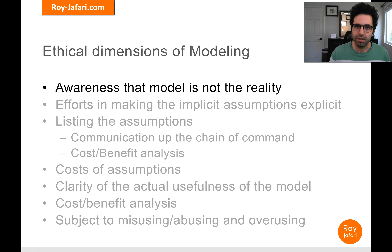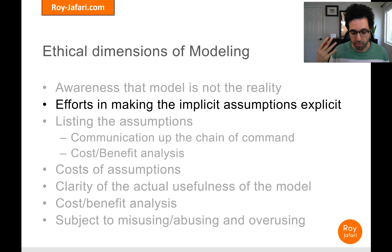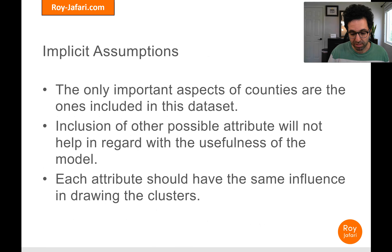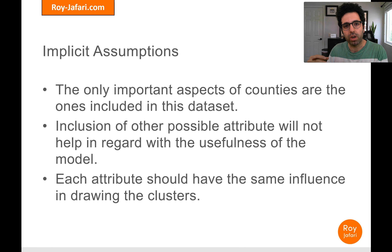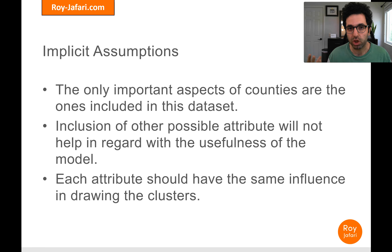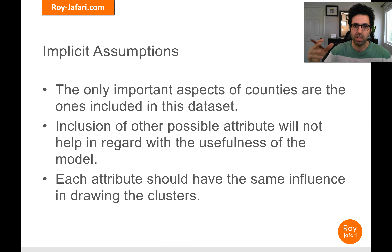Let's go over the ethical modeling dimensions. Awareness that the model is not reality is very important. We also want to make sure implicit assumptions are made explicit. Some implicit assumptions here are: first, the only aspects of counties that matter are the attributes included; second, if we failed to include other attributes — whether out of ignorance, lack of access, or inability to measure — the assumption is that including them would not significantly change our decisions or create fairness or equity issues.